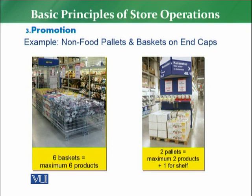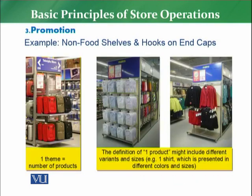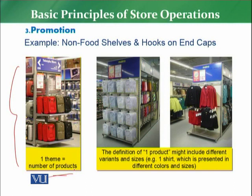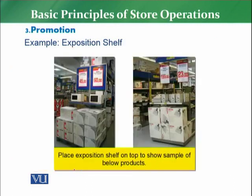A non-food example: if the product is in a cage where six baskets are placed, there have to be six different products — one product per basket. Similarly for shelves: if there are two pallets — pallet number one and pallet number two — then two different products, plus one shelf visible here. This is our non-food example. For thematic display in non-food: one theme, which is the theme of a bag, and you have one product for it. For clothing — shirts, coats, jackets — you have to hang them on hooks, and normally on the end cap the display follows one product or one theme.